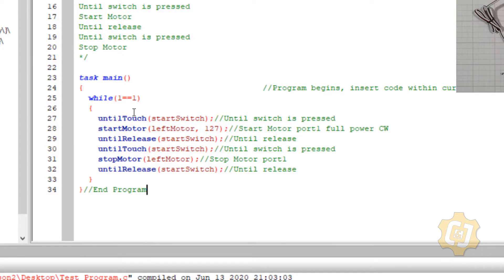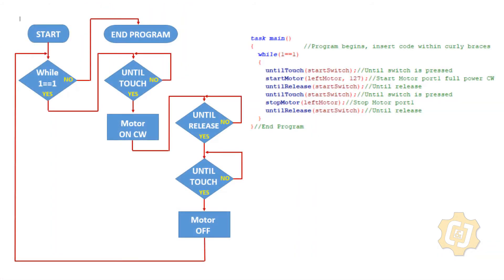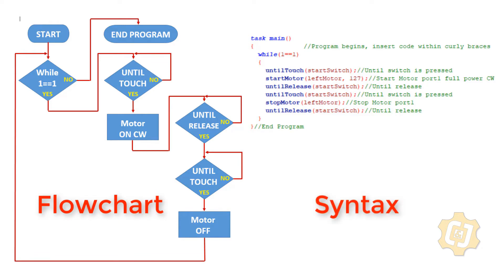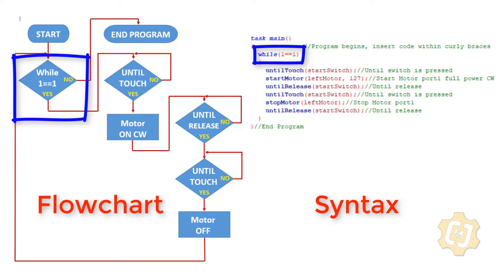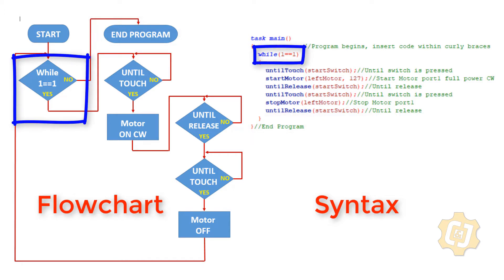To better understand what's happening in this while structure, let's look at these two different styles of programming side by side. On the left we have flowchart style programming and on the right we have our syntax programming. Starting at the top, we come into the beginning of this while, which asks: is one equal to one? If the answer was no, that would go straight to end program. Since it's true, we move on to our until touch.